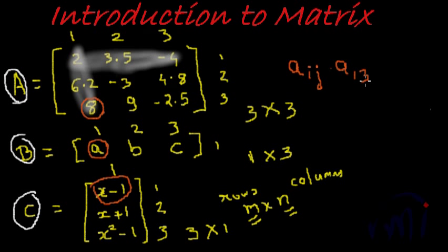So let's take an example: a sub 1,3 would be first row and third column of matrix A, which is nothing but minus 4. Let's take another example. Here let's take b sub 1,3. B 1,3 would be first row, third column, which is C.